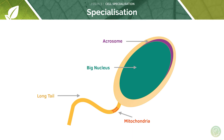First of all, let's look at the acrosome, which is at the head of the sperm. The acrosome contains enzymes that are used for the digestion of the outer layers of the egg cell to allow the sperm to fuse with the egg cell.